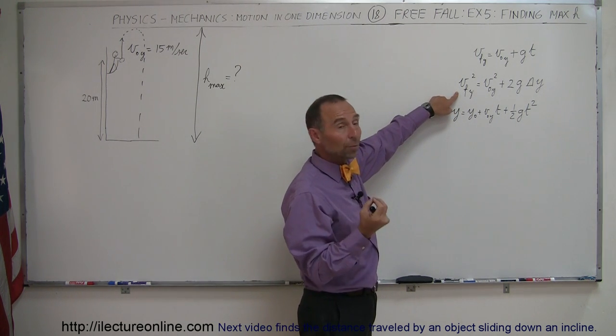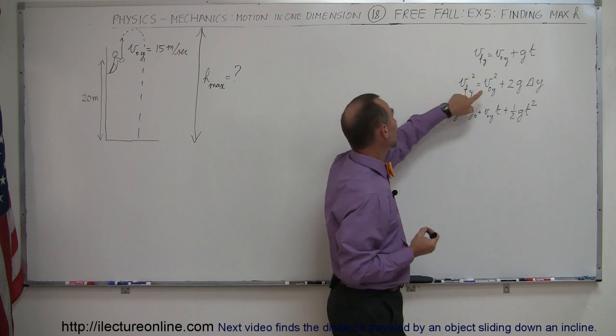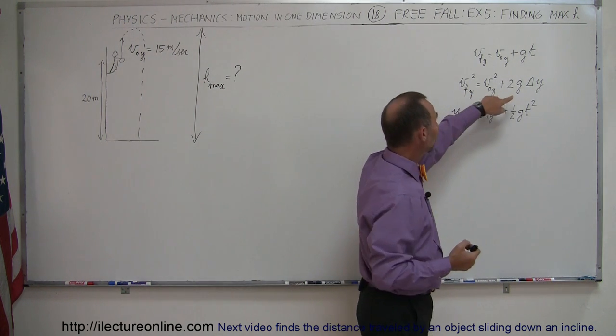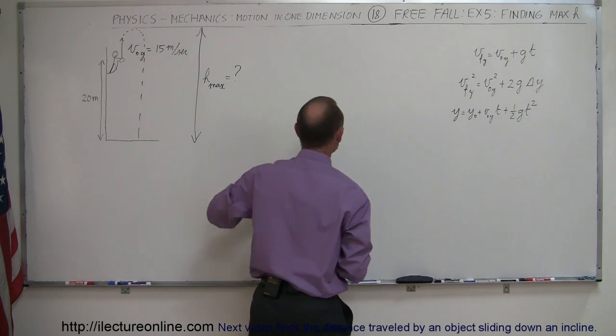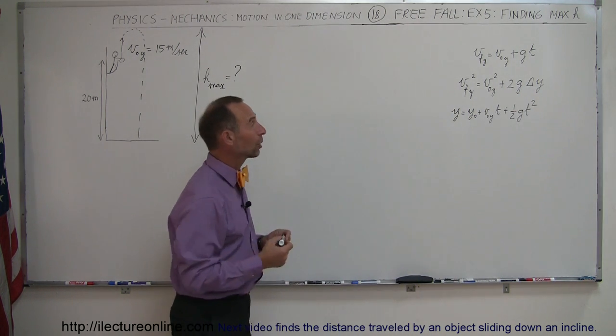V final now will be assumed to be zero and reaches the maximum height. V initial is given and G is a known quantity, so the only unknown here is Y, the additional height that we'll gain from our starting point. So let's go ahead and use that equation.